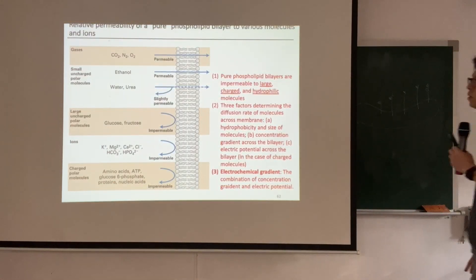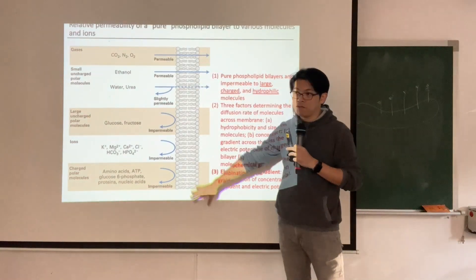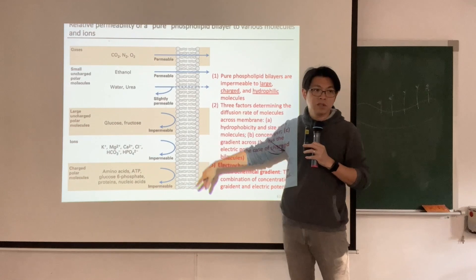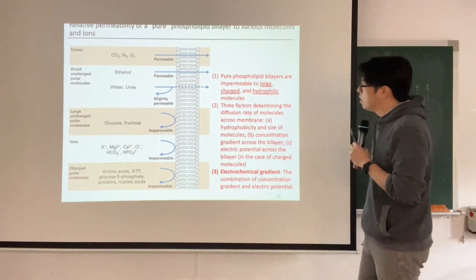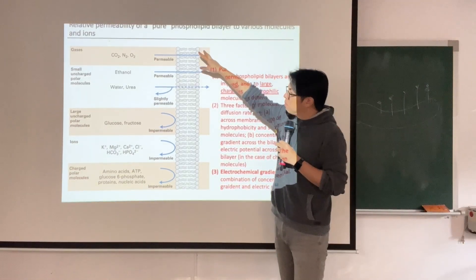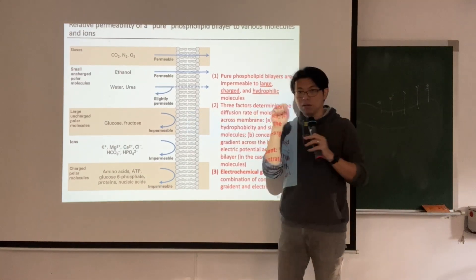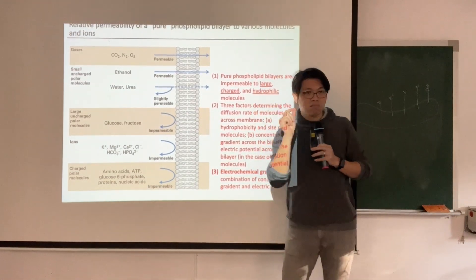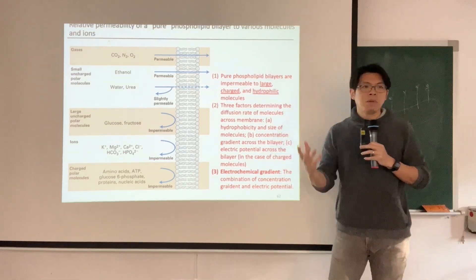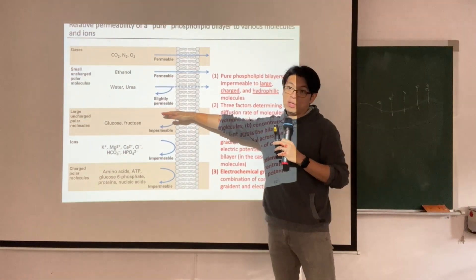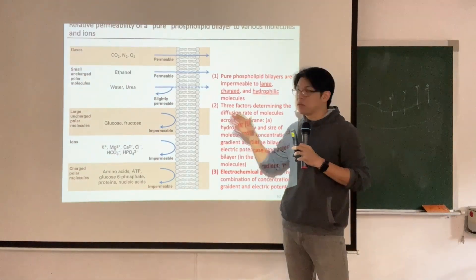If we only talk about the permeability of pure phospholipids — no membrane proteins, only pure phospholipids — what kinds of molecules are permeable? The biomembrane has a hydrophobic core, with some space between lipids, so very small molecules can still penetrate. Hydrophobic molecules penetrate more easily. Hydrophilic molecules and large molecules cannot penetrate. So pure phospholipids without any membrane protein are impermeable to large, charged, and hydrophilic molecules.